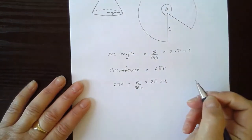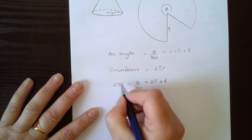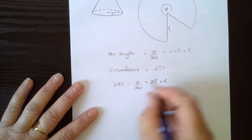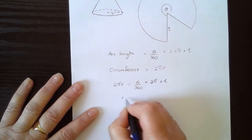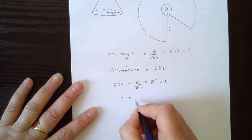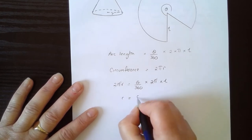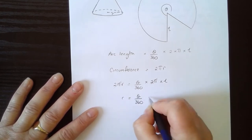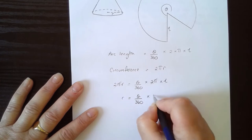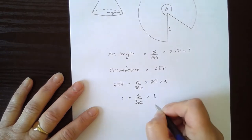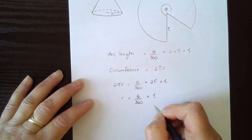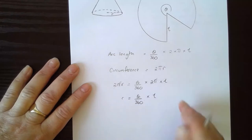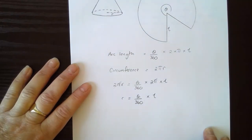I'm going to divide both sides by 2 pi, and I get an expression for the radius r: theta over 360 times by L. It's worth remembering that one — it's sometimes quite useful.